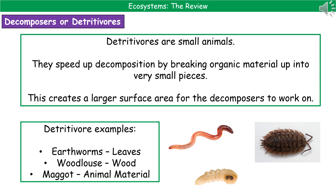Three examples of detritivores are shown in the pictures. Earthworms consume leaves and release smaller bits of leaves that decomposers can then break down. The woodlouse, as its name suggests, does the same thing with wood, and maggots do the same thing with animal material.